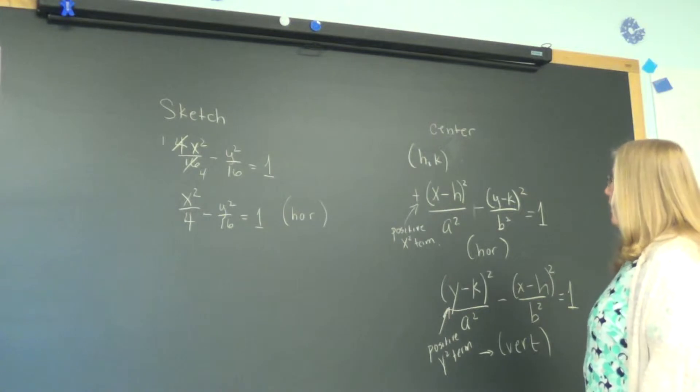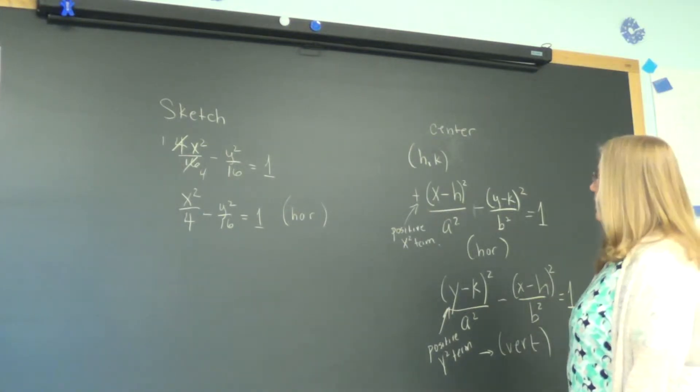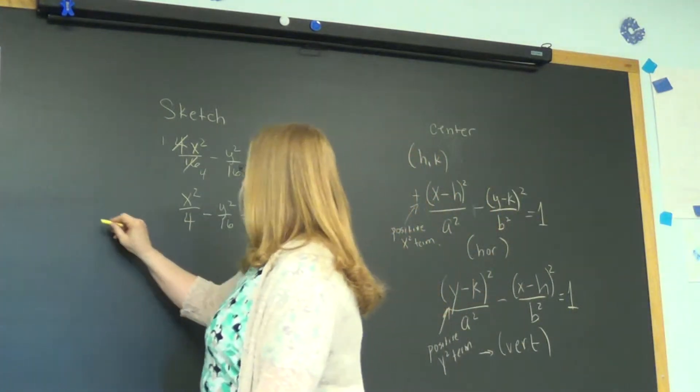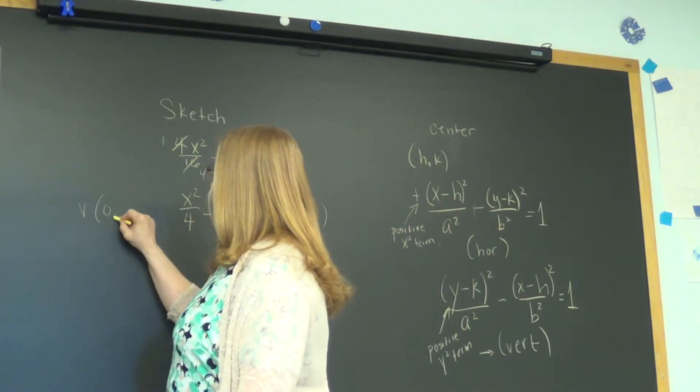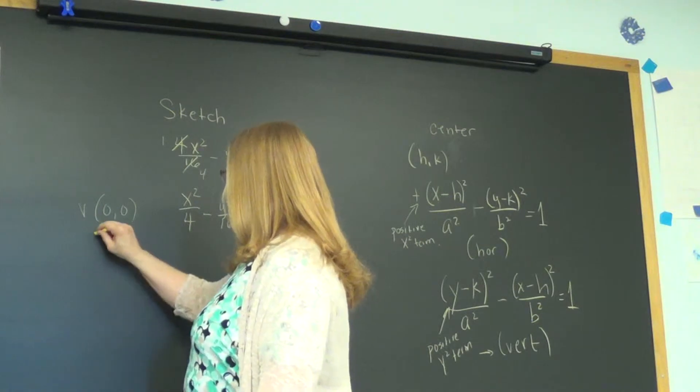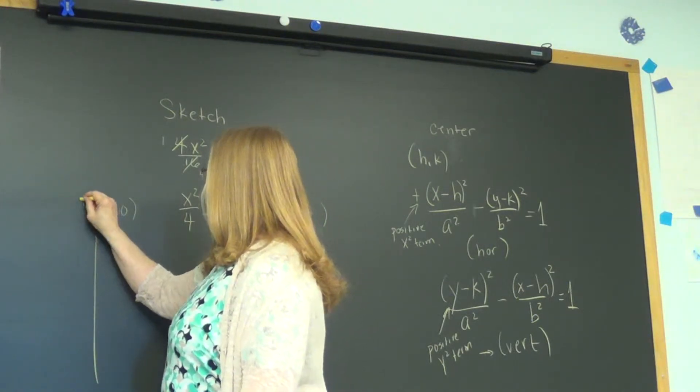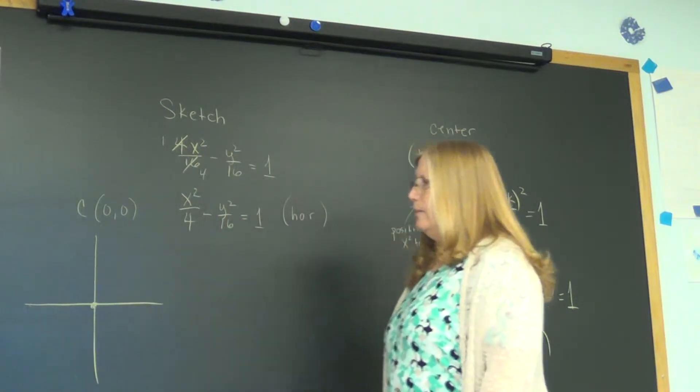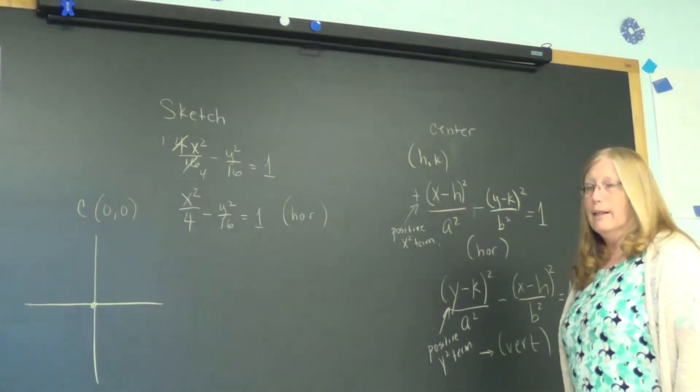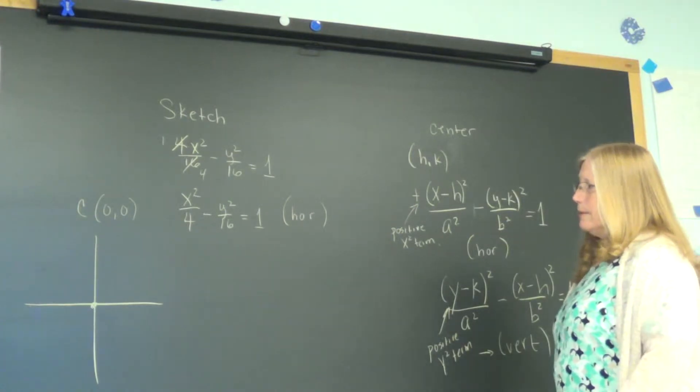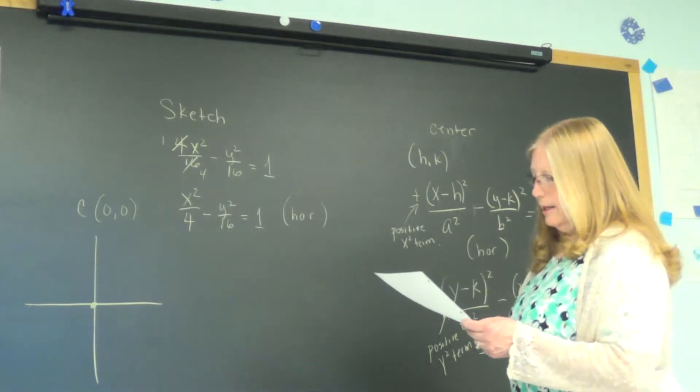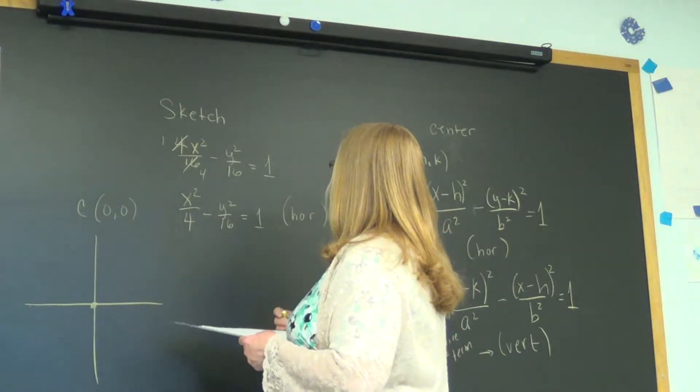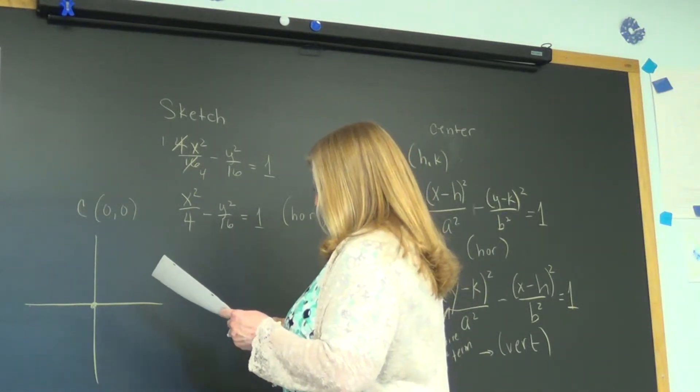Notice h and k are not there, so the vertex is zero and zero. So that's nice. I'm sorry, I keep calling it the vertex. It's the center. So I'm going to put the center right there. That is not going to be a point on the hyperbola, but it will be involved.